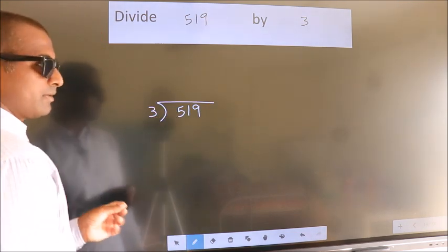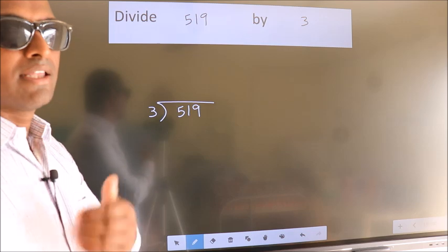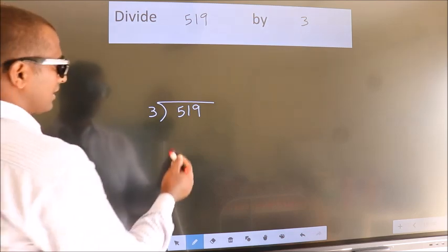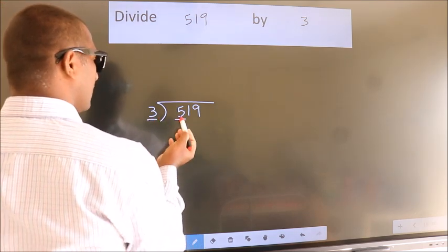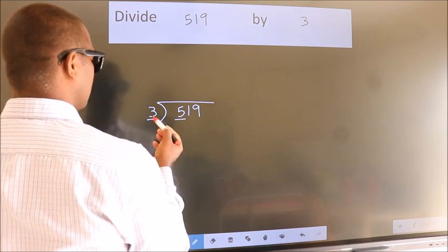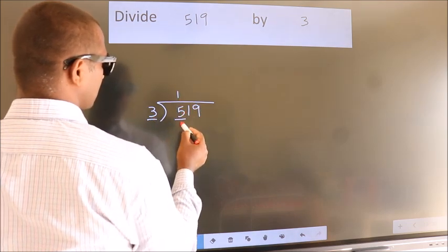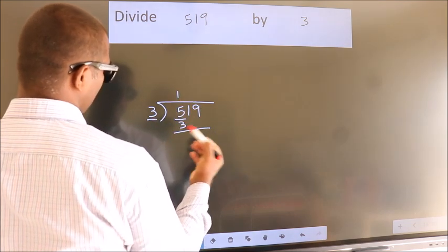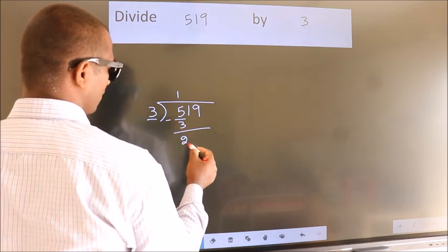This is your step 1. Next, here we have 5, here 3. A number close to 5 in 3 table is 3 1s 3. Now, we should subtract. We get 2.